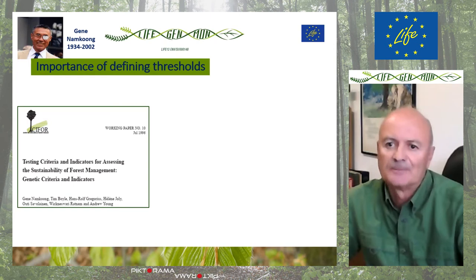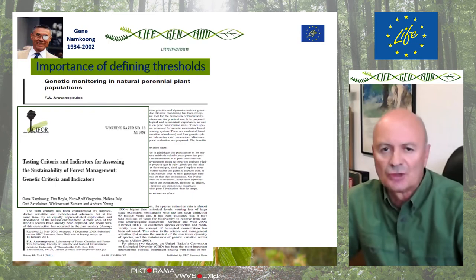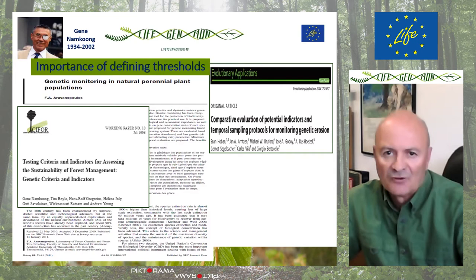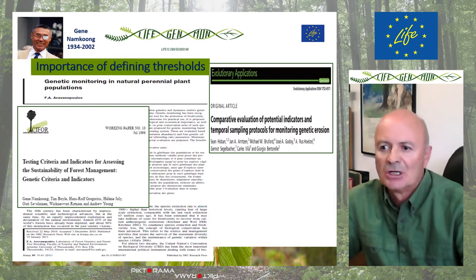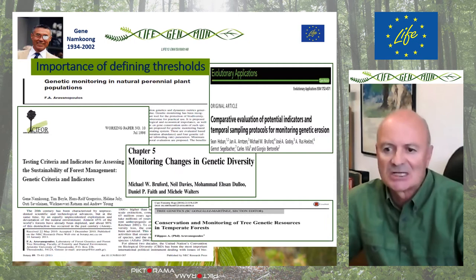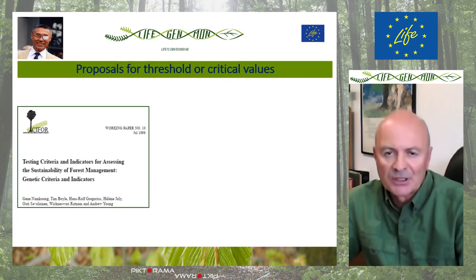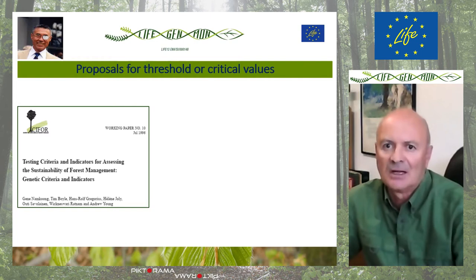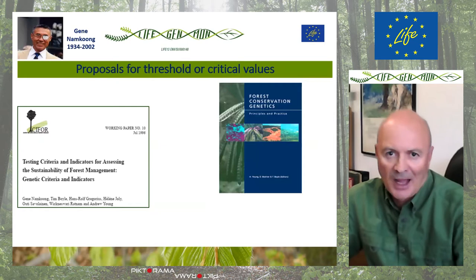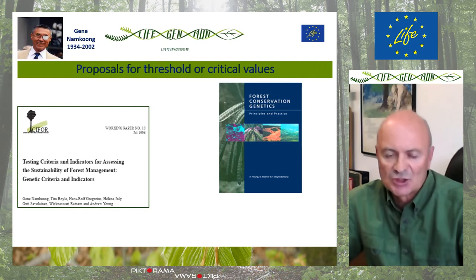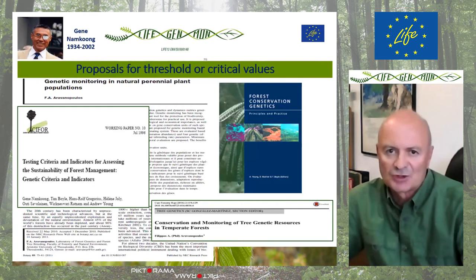Many years later, I wrote a paper proposing some thresholds, followed by a paper by Sean Hoban as the main author, where thresholds for indicators were discussed. I also wrote another paper on this issue. Lately, Mike Bruford has written a similar paper indicating the need for thresholds for genetic monitoring. Out of these papers, particular threshold values come from the first paper by Gene Nam-Kung et al., a similar paper by Tim Boyle in a well-known book on forest conservation genetics, and from my own papers. Other papers do not refer to specific thresholds.